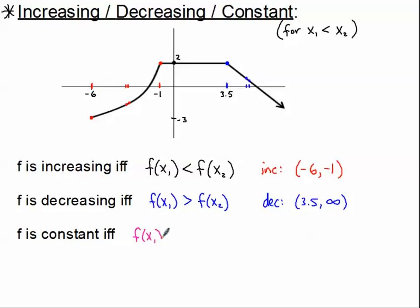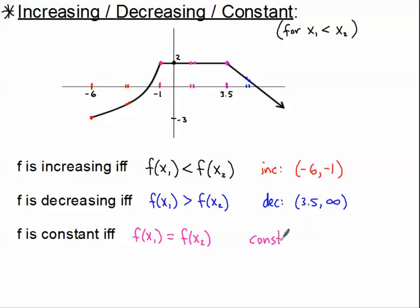Constant is when f(x₁) is equal to f(x₂). So we have a constant interval right here — we know that we're constant here. If this is x₁ and this is x₂, then f(x₁) and f(x₂) are exactly the same, which means we'd be constant all the way through this interval — just a nice plateau right here. We describe the interval from this value on the x-axis to this value on the x-axis. So we are constant from negative 1 to 3.5.